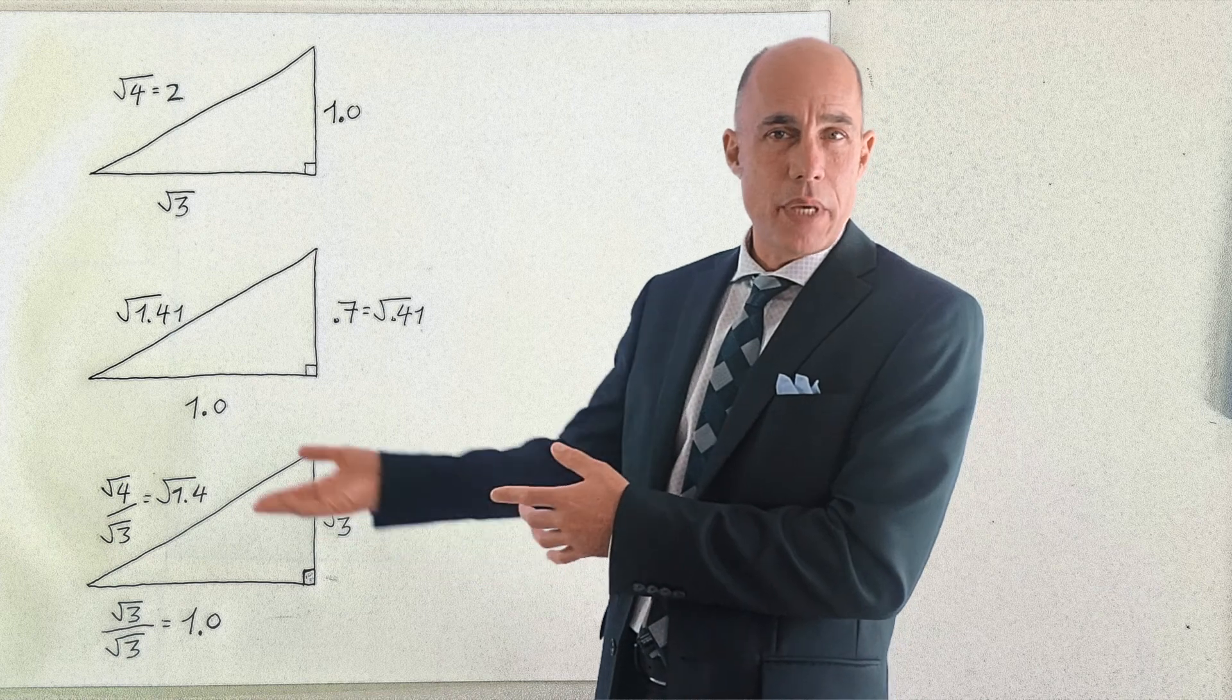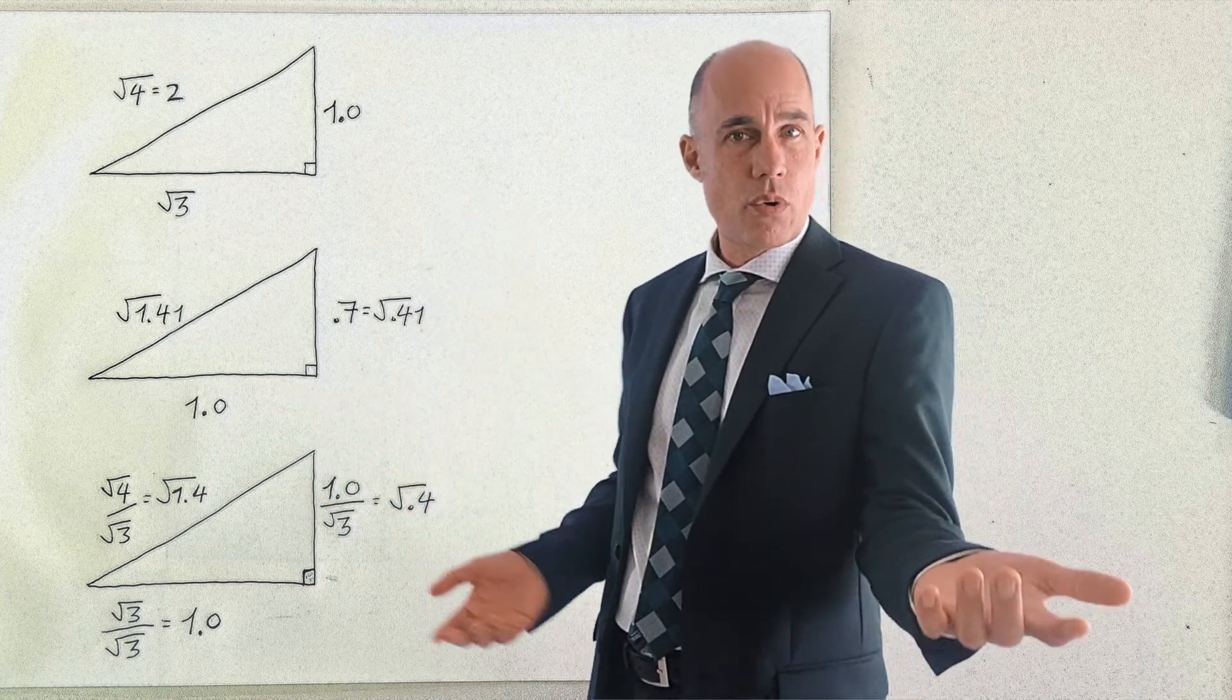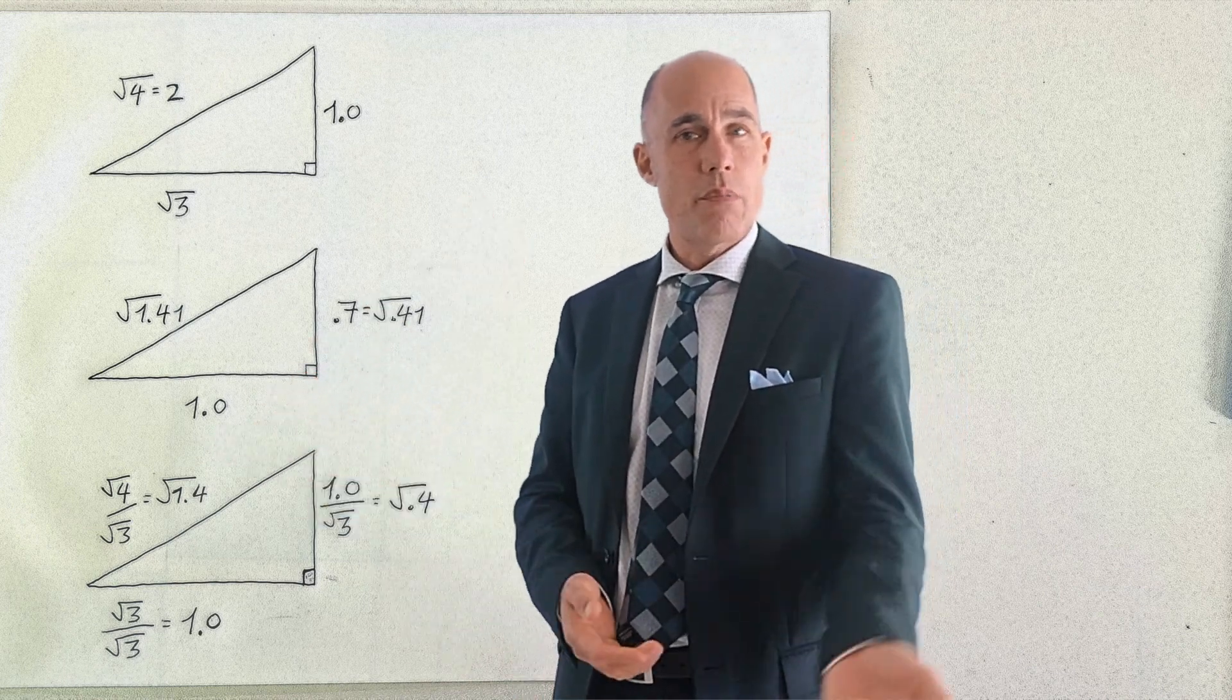Here's the triangle that we were just looking at where the base is 1 and the other side of the right angle is 0.7 which is the square root of 0.41 and its hypotenuse again is the square root of 1.41.